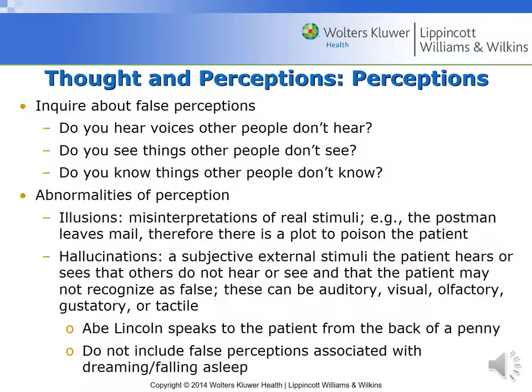When dealing with abnormalities of perception, you want to figure out if a patient's perceptions are false. You can ask if they see or hear things other people don't, or 'Do you know things that people don't know?' When assessing reported voices, ask: 'When you heard those voices speaking to you, what did they say and how did it make you feel?' Or frame questions contextually: 'After you've been drinking a lot, do you ever see things people say aren't really there?' or 'Sometimes after major surgery like this, people hear peculiar or frightening things — have you experienced anything like that?' This allows you to identify abnormal perception.